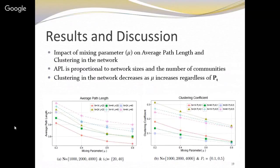We tried to learn the impact of mixing parameter on average path length and clustering coefficient. Average path length is proportional to network size and number of communities. As we increase the mixing parameter, average path length reduces, because we are creating more edges with other communities, resulting in lower overall path length. Conversely, decreasing the mixing parameter means fewer edges with other communities, so APL grows. This is the expected result.